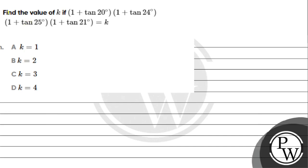Hello everyone, let's see the question. Find the value of k if (1 + tan 20°)(1 + tan 24°)(1 + tan 25°)(1 + tan 21°) = k.